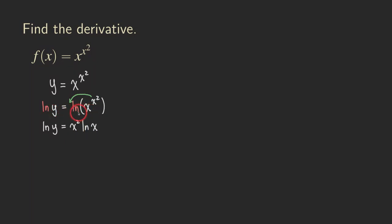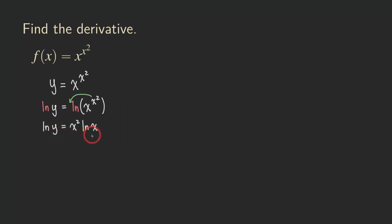Remember, this is not multiplication — this is a function composition. We are putting the y inside the ln function; this is not ln times y. Now what we are going to do is use implicit differentiation, because we are actually defining y as a function of x.